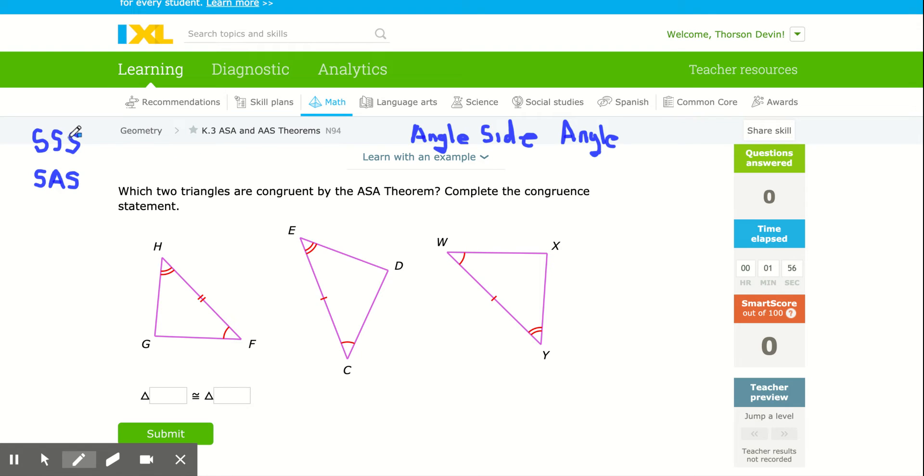In the last lesson, we learned side, side, side, where if we had two triangles, where we had all three corresponding sides being equal in length, then the two triangles were congruent.